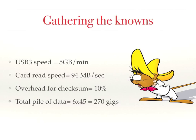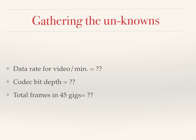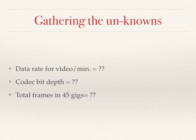Overhead for checksumming is roughly 10% — so checksumming is about 10% slower than a straight finder copy from one drive to the other, but of course it's much safer. The total pile of data you're going to receive that day is 6 cards at 45 gigs per card, or roughly 270 gigs of data. Now we have to gather the unknowns: what's the data rate for the video per minute, what is the bit depth of the codec, and how many total frames are there in 45 gigs of data assuming 30 frames a second?